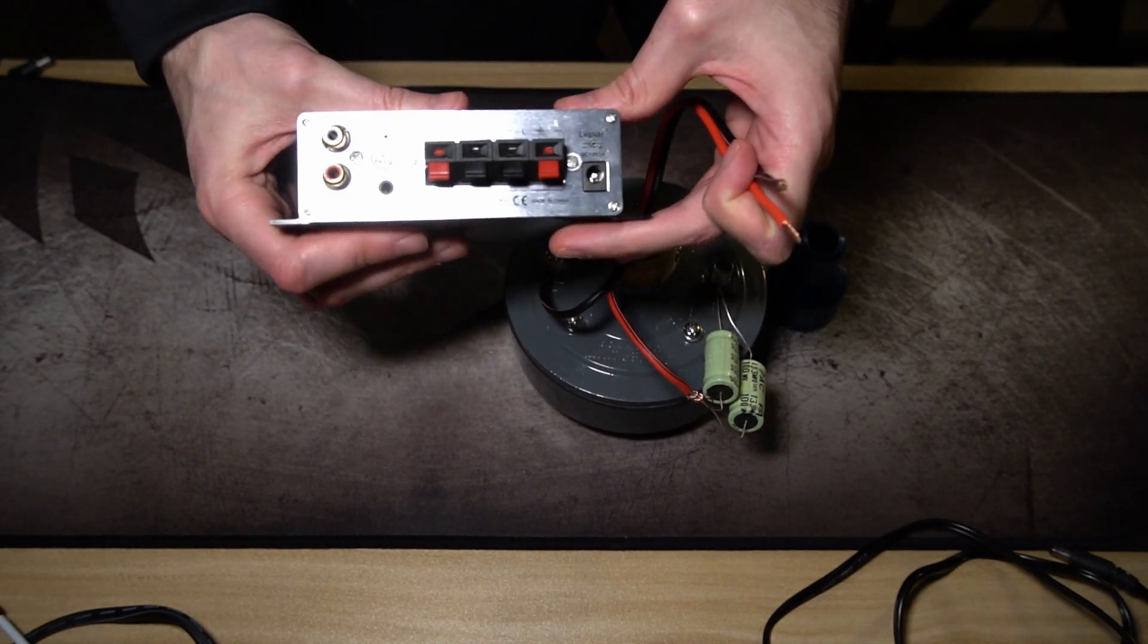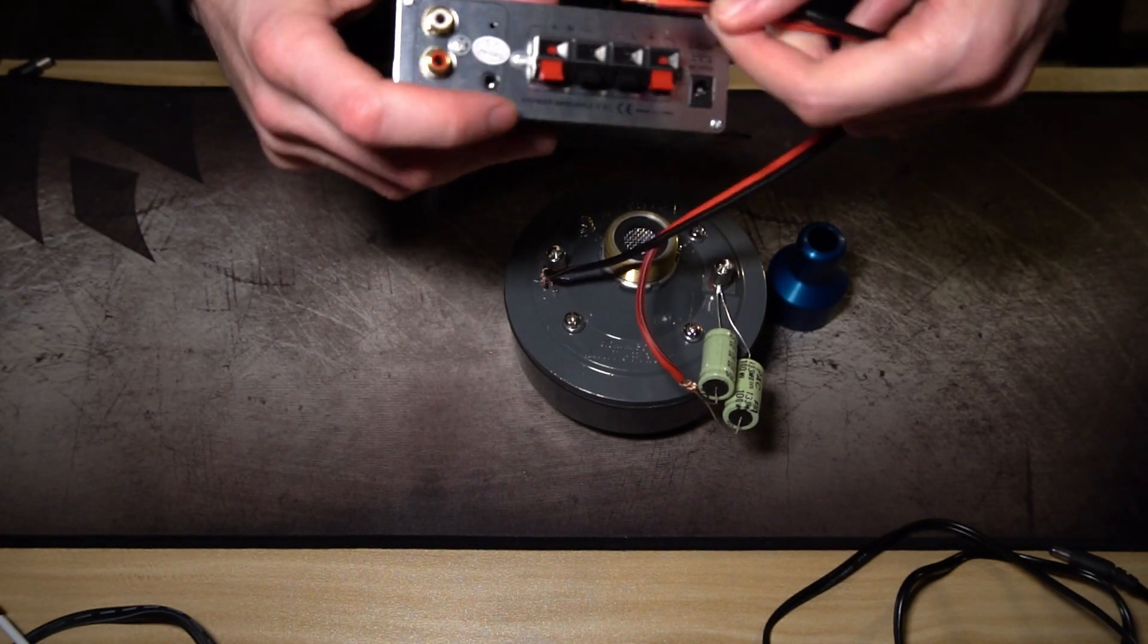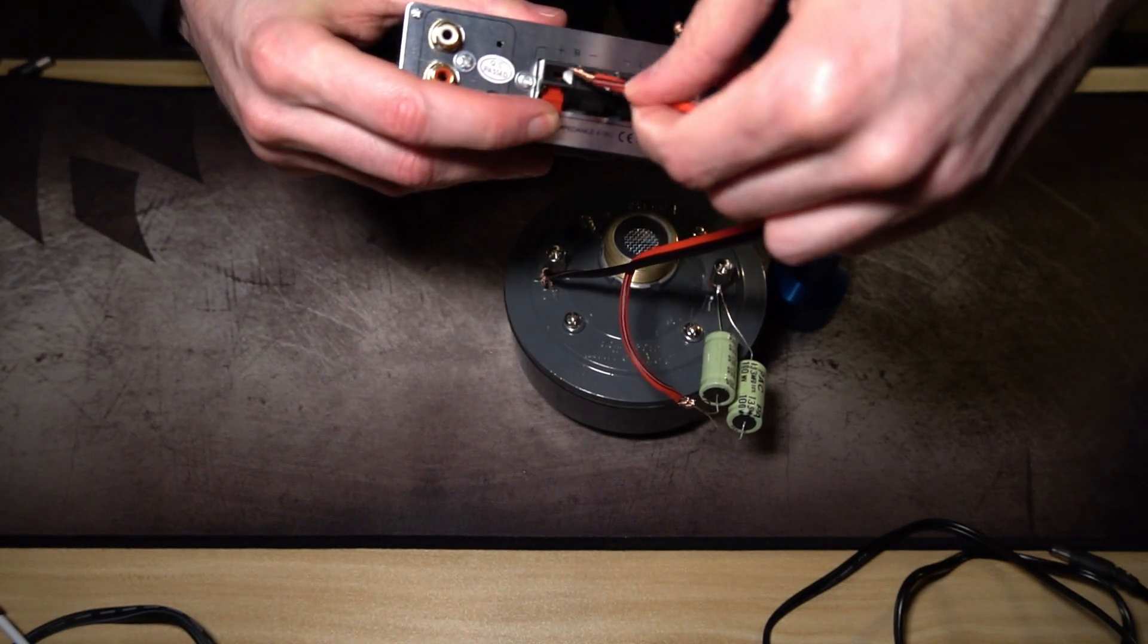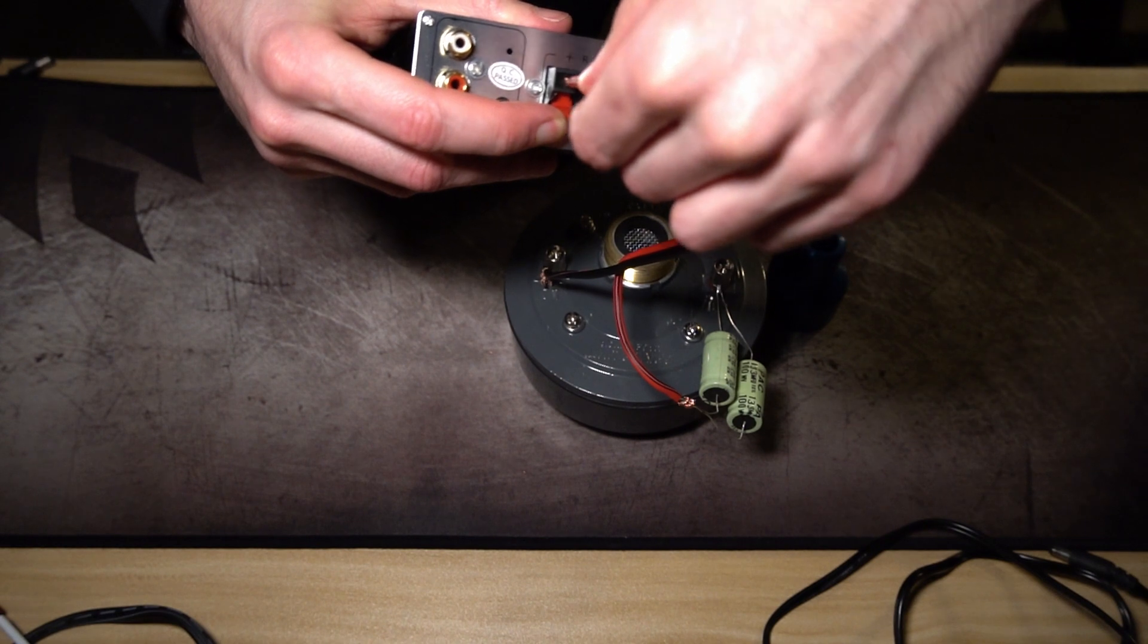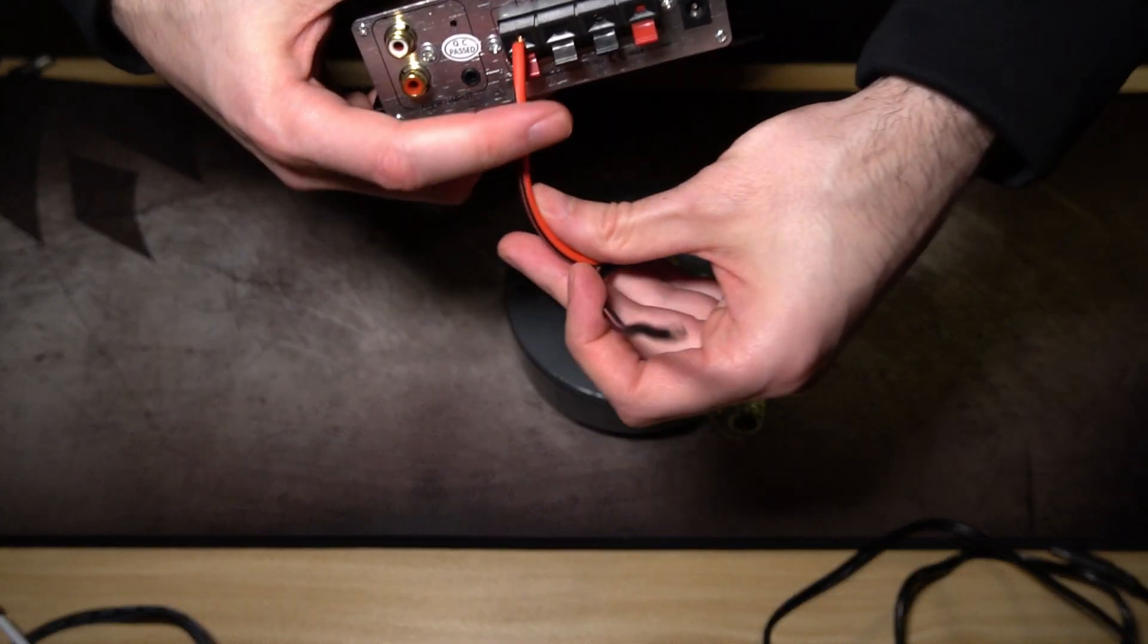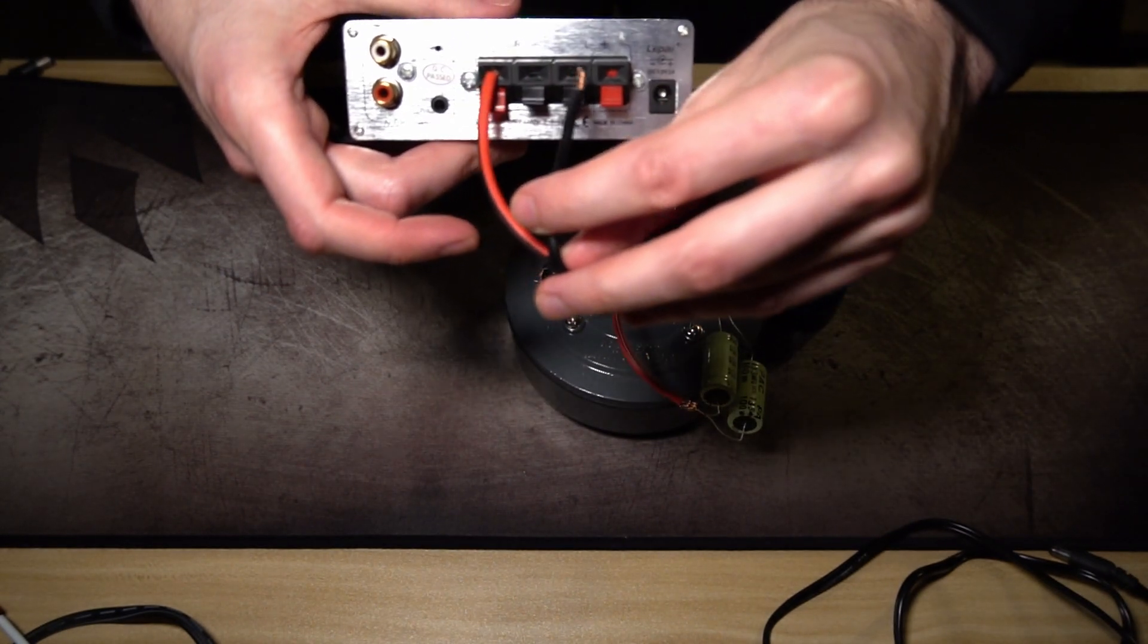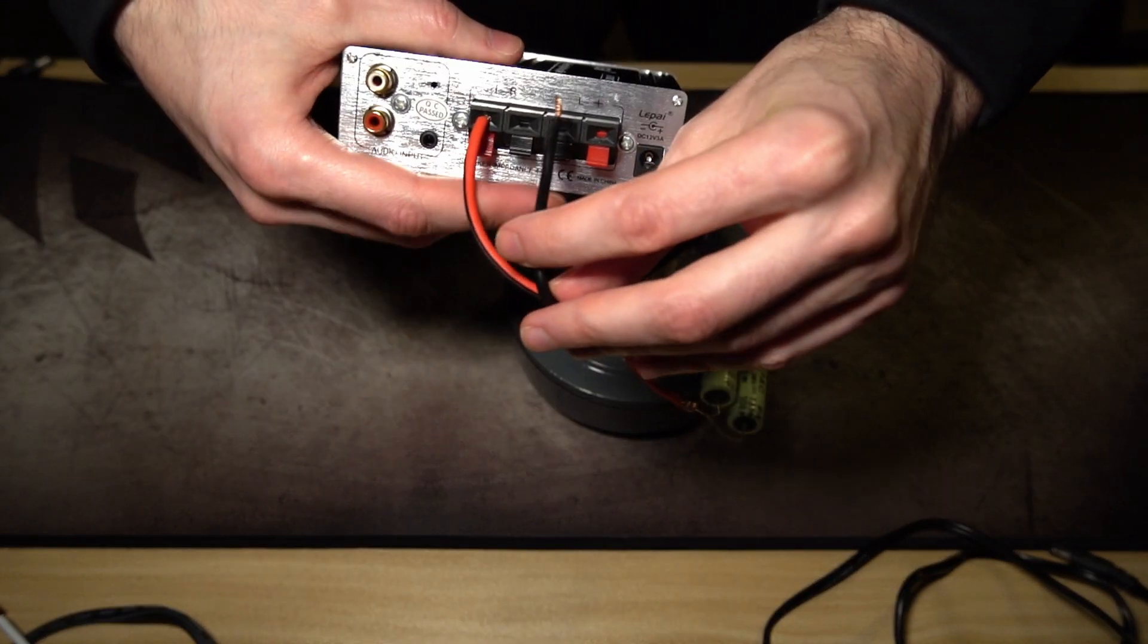Now you're going to take your amplifier and put the red with red on the right channel. Instead of putting the black with black on the right channel, you're going to put the black with black on the left channel.